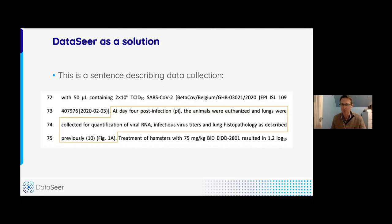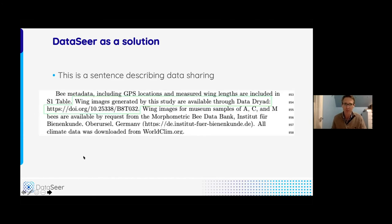So this is a sentence describing data collection. At day four post-infection, animals were euthanized and lungs were collected for quantification in the viral RNA. That's one dataset. Infectious virus titer, that's a second dataset. And lung histopathology, that's a third dataset. So three datasets are being described in this sentence, and ideally the authors would provide all of them. Here is a sentence describing data sharing. Wing images generated by the study available through Data Dryad, and they give a DOI.